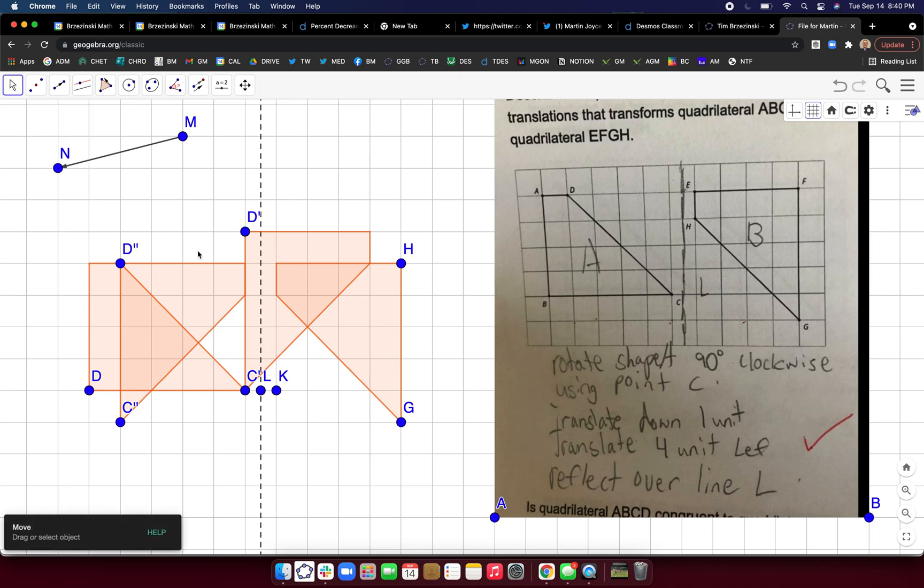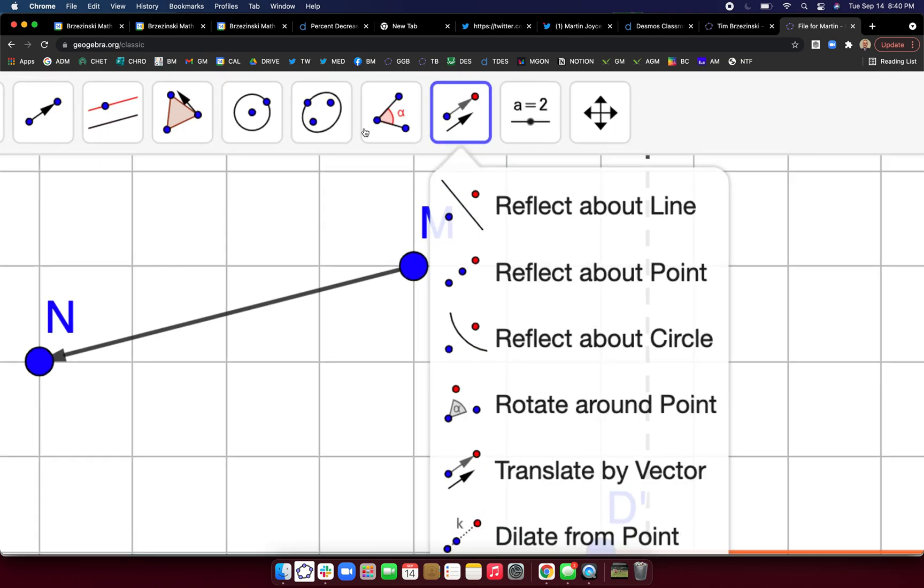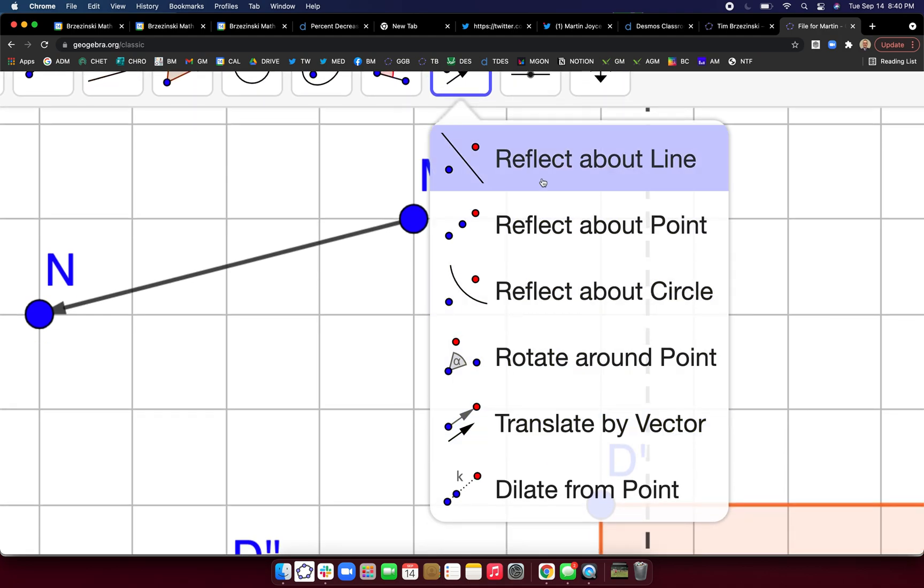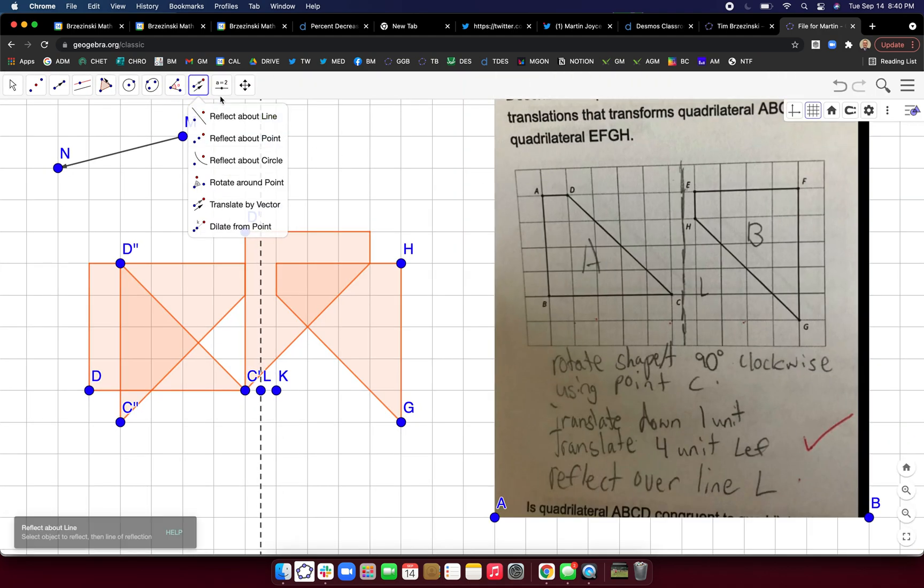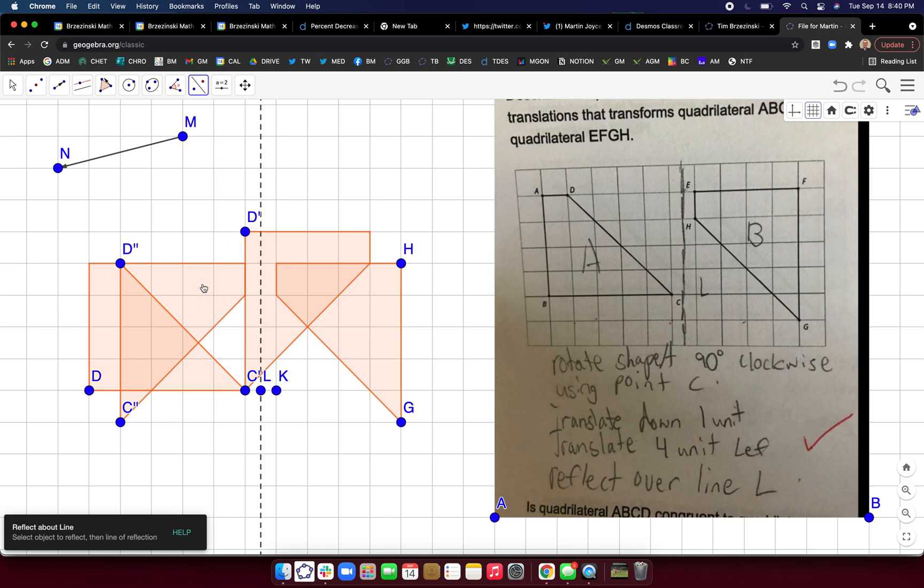And now the student says reflect this about L and you can really see now that it's totally going to work. But to do it again, we'll use the reflect tool, which is in that same menu. Reflect about line. Click on the object, click on the line and voila. There you go.